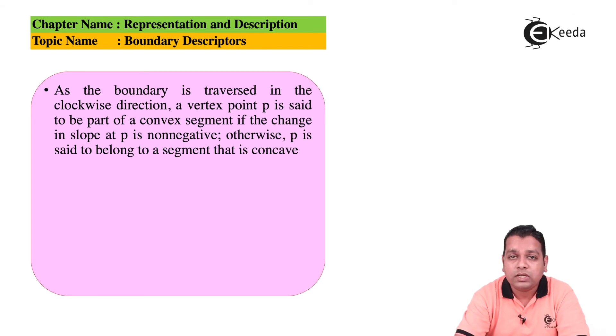Now as the boundary is traversed in the clockwise direction, a vertex point P is said to be a part of the convex segment if the change in slope at P is non-negative. Otherwise, P is said to belong to the segment that is concave in nature.